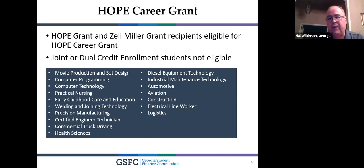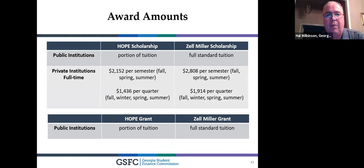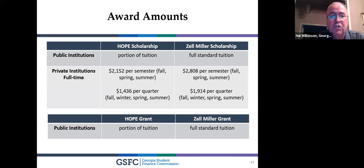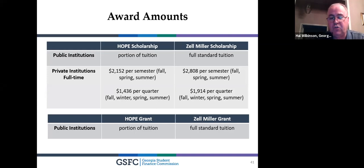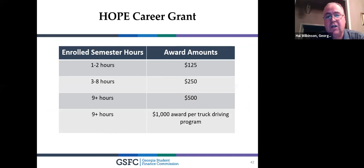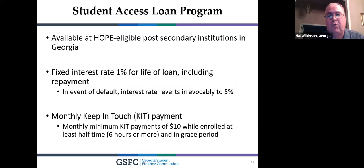There's also the HOPE Career Grant — if you go into a particular field at a state technical school, they give you money on top of the HOPE Grant. For example, truck driving can get you up to $1,000. Georgia gives you a lot of great programs to complement federal aid. If you get the HOPE Scholarship, it covers 60 to 80 percent of tuition. Zell Miller covers full standard tuition; at private schools it's $2,152 per semester, and Zell Miller is $2,808 per semester.